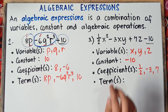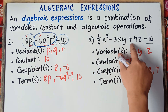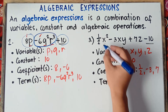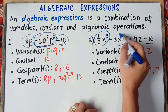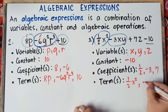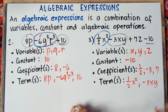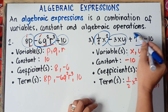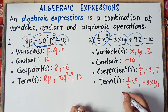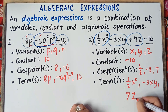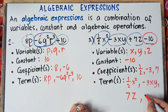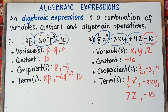Terms are separated by plus and minus signs. First term is one-half x squared; second term is negative 3xy; third term is positive 7z; and our last term is negative 10. You're all set with example number 3.